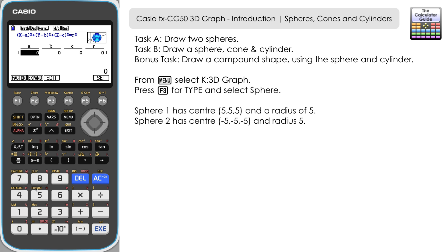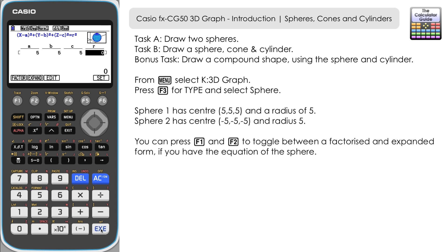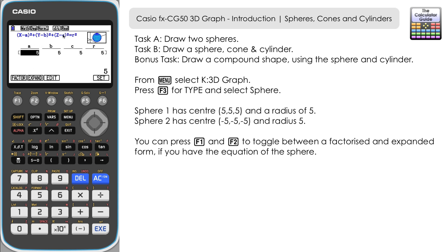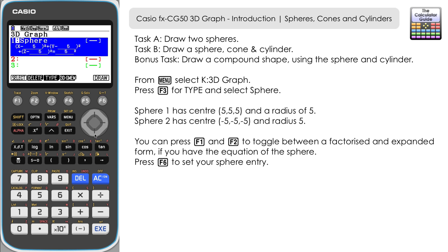We're going to input sphere 1 which has a center of (5, 5, 5) and a radius of 5. You can see the input is in factorized form, so you input 5 as a, 5 as b, and 5 as c in relation to your x, y and z coordinates, and r is for the radius. If you have a sphere equation in expanded form, press F2 to bring up that input. Otherwise just use the factorized form and press F6 to set.